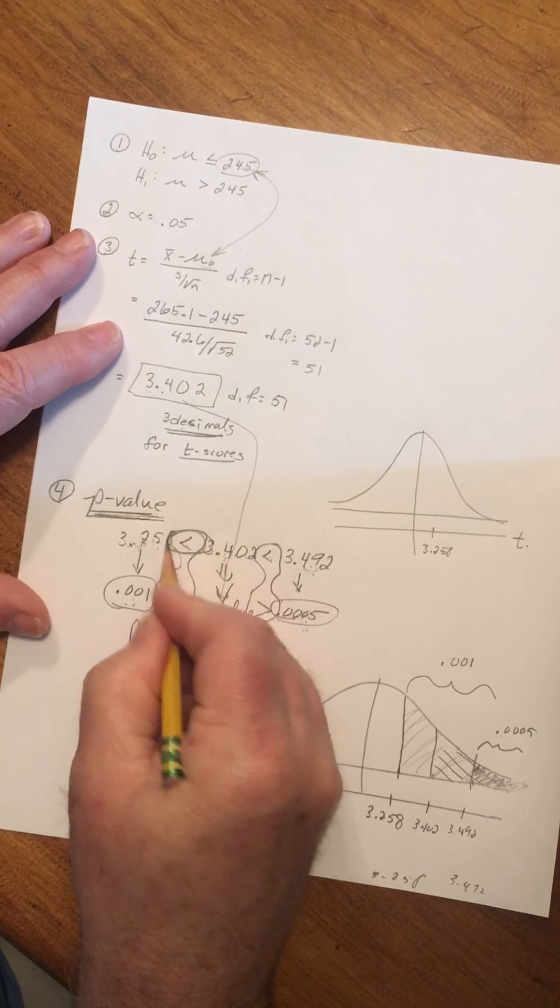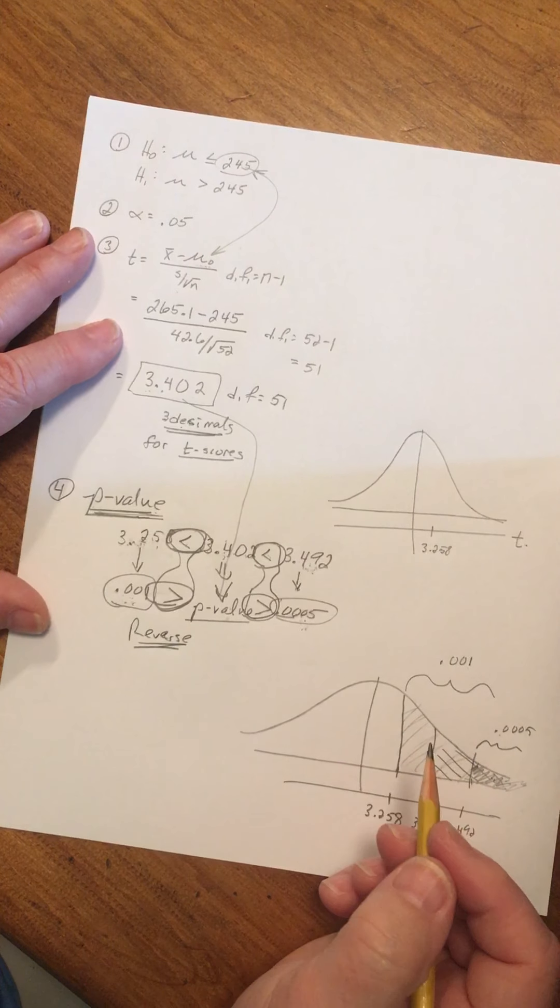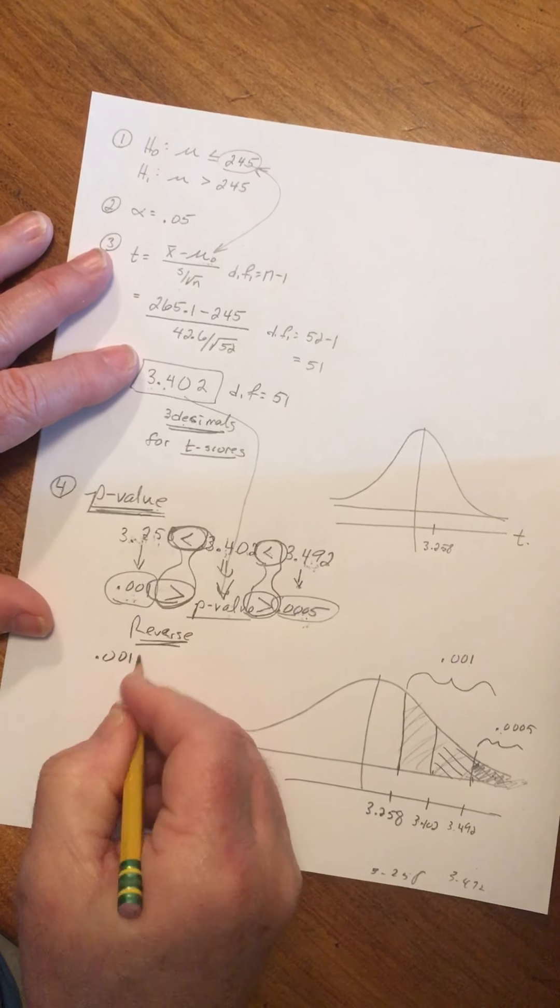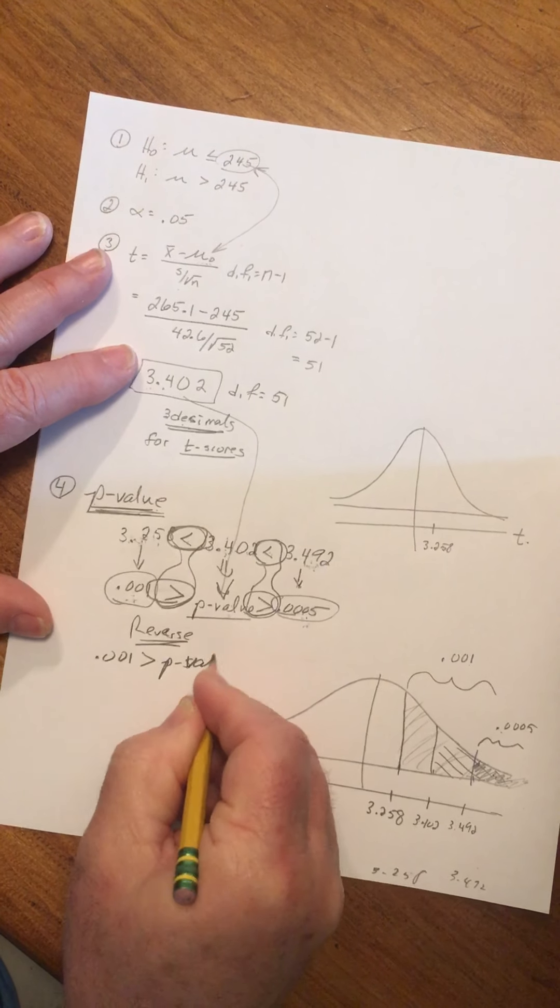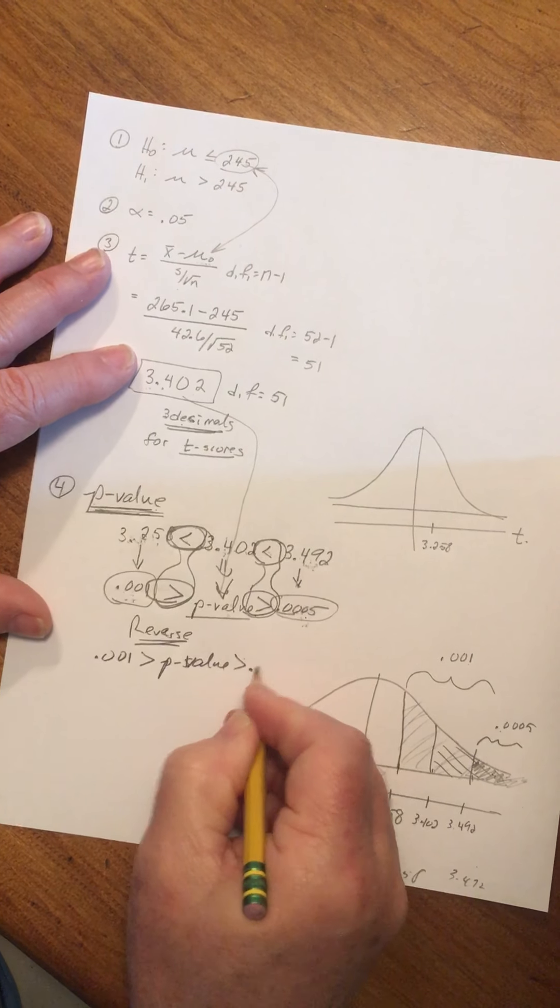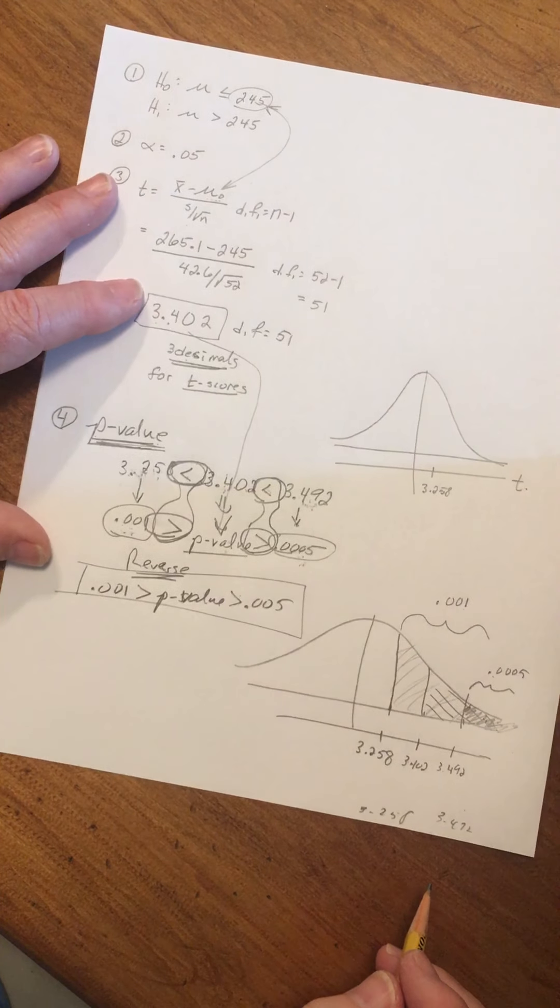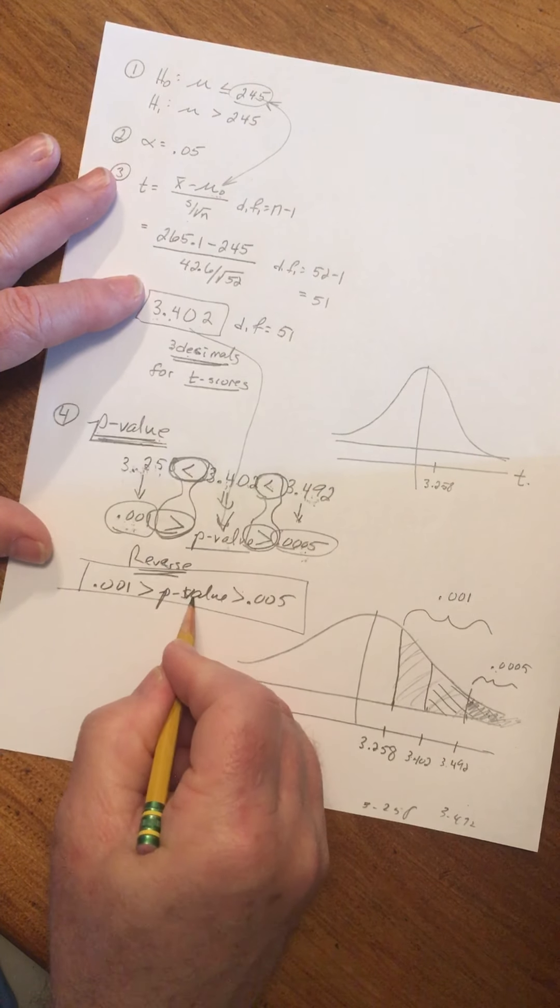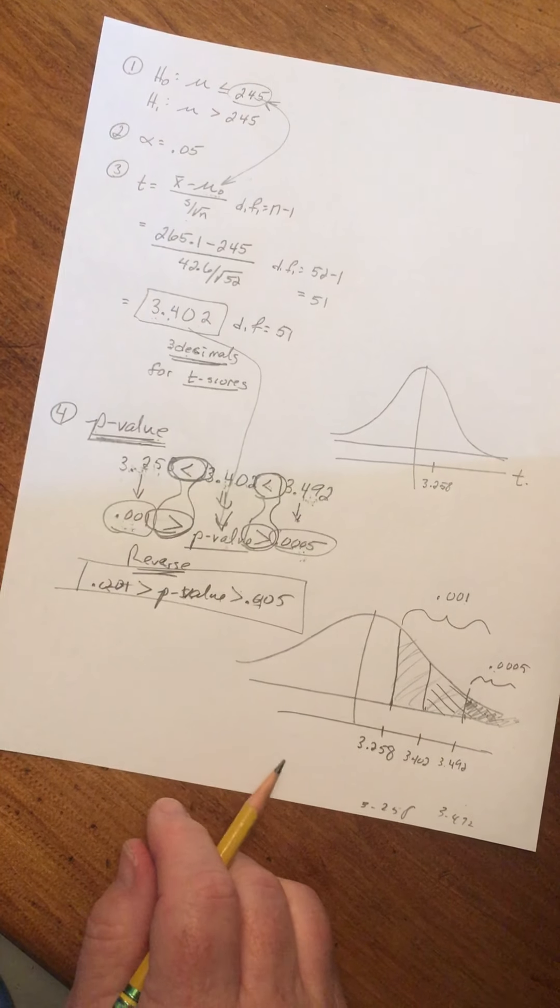So .001 is greater than the p-value we seek, which is greater than .0005. That's all we need in our computation for the p-value. The p-value we have is somewhere between those two numbers. That's all we need to find.